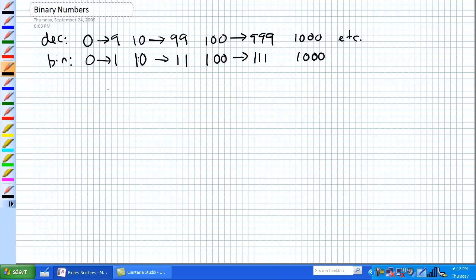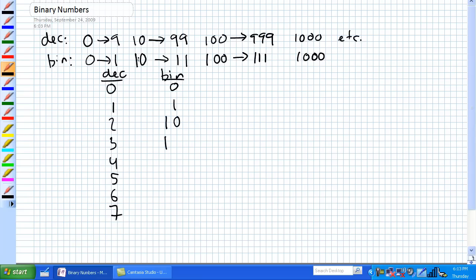So if we do this, zero, one, two, three, four, five, six, seven in decimal. Counting in binary - zero, one. We ran out of digits, so we've got to add one more. One, zero. One, one. Ran out of digits, got to add one more. One, zero, zero. One, zero, one. One, one, zero. One, one, one. Ran out of digits. Add one more. Same thing, just counting straight through.